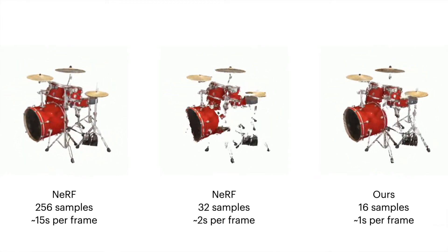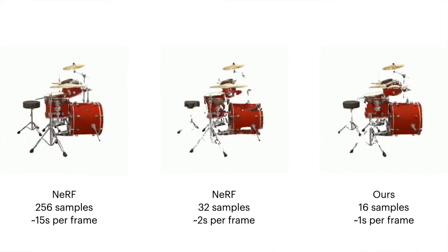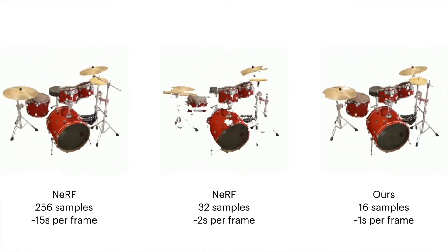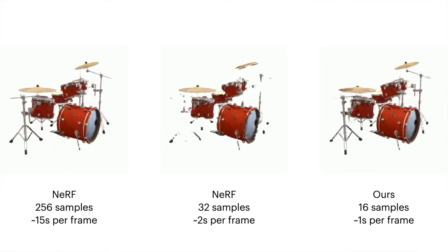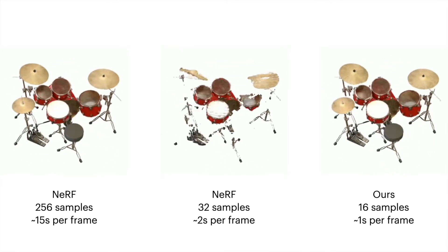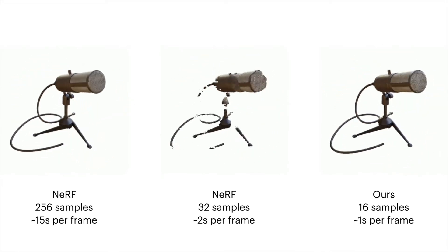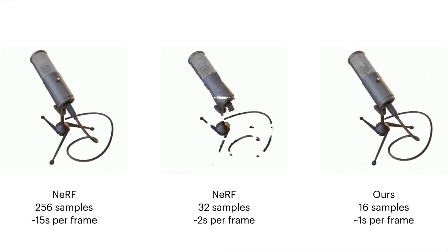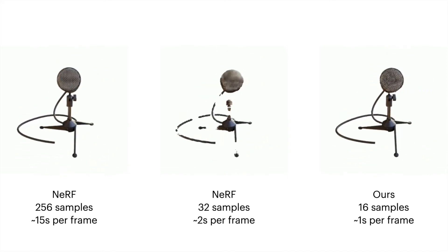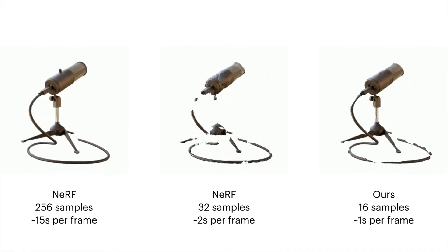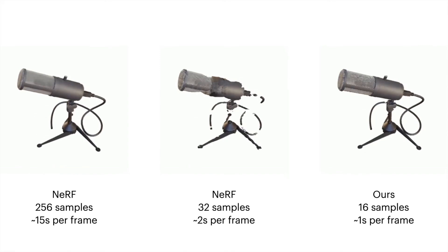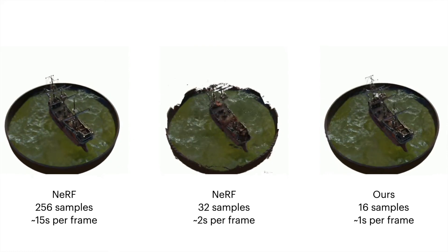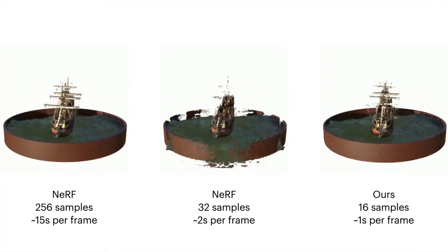We also tried different objects, and it's the same story — we managed to decrease the rendering time with only minimal loss of quality. There are some artifacts: sometimes the depth network mispredicts the depth, and that's where you get these little white spots. But most of the time, the depth network predicts the depth correctly, and therefore we managed to sample the correct range and render the image correctly, or with only minimal loss of quality.